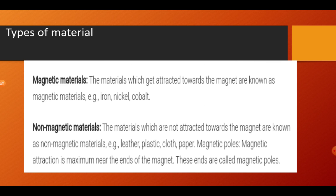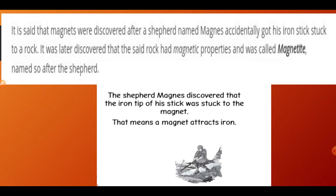The ends of a magnet are called magnetic poles, and they possess the maximum power of attraction. About the discovery of magnet: magnets were discovered after a shepherd named Magnes accidentally got his iron stick stuck to a rock. It was later discovered that the rock had magnetic properties, was called magnetite, and this is the natural magnet named after the shepherd.